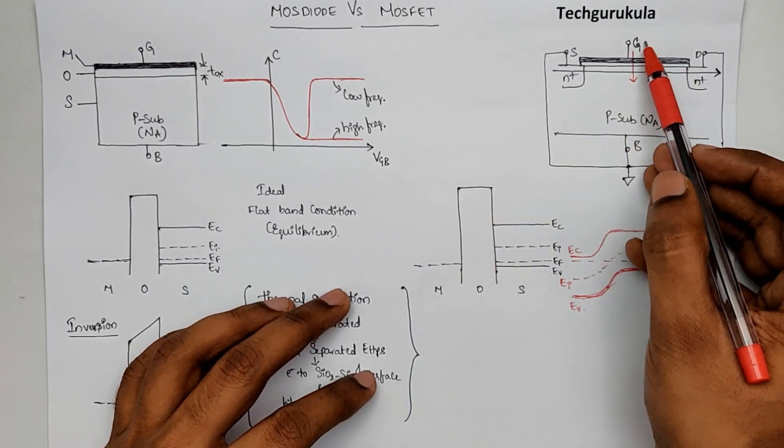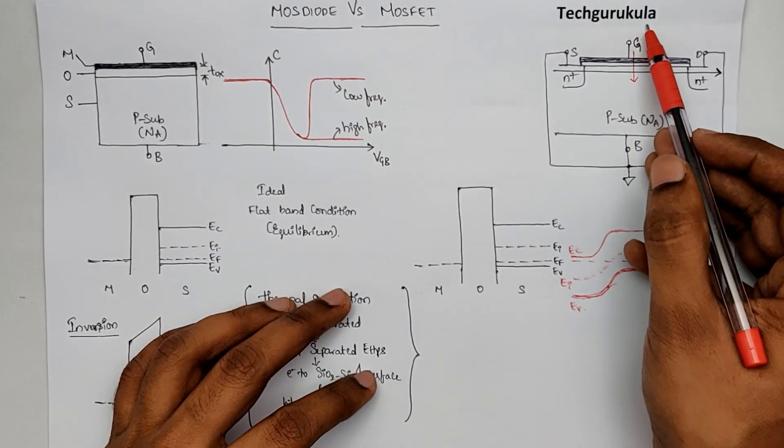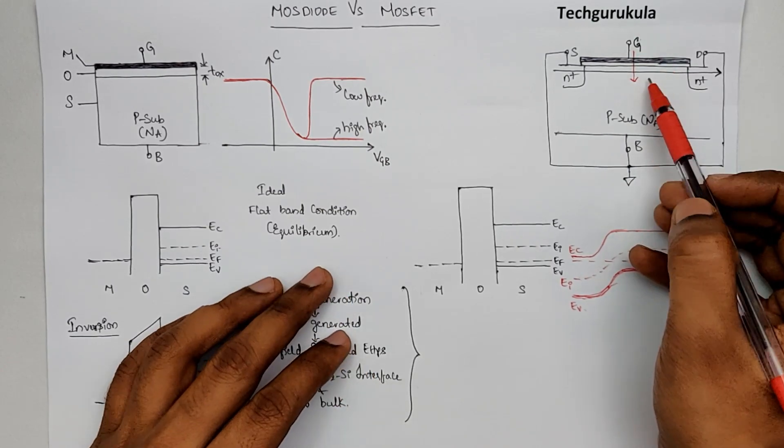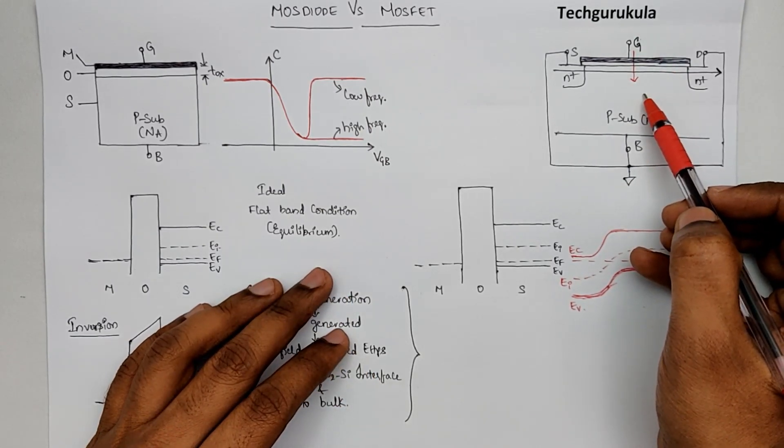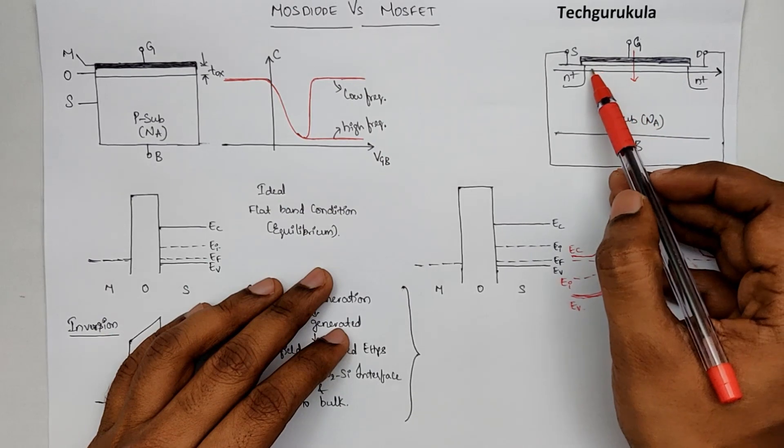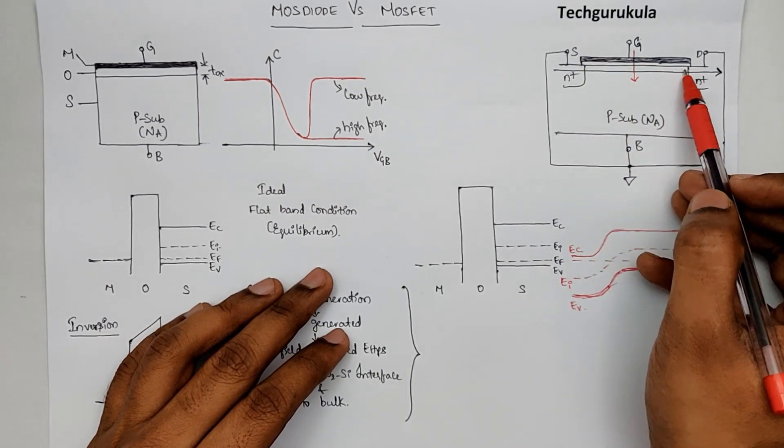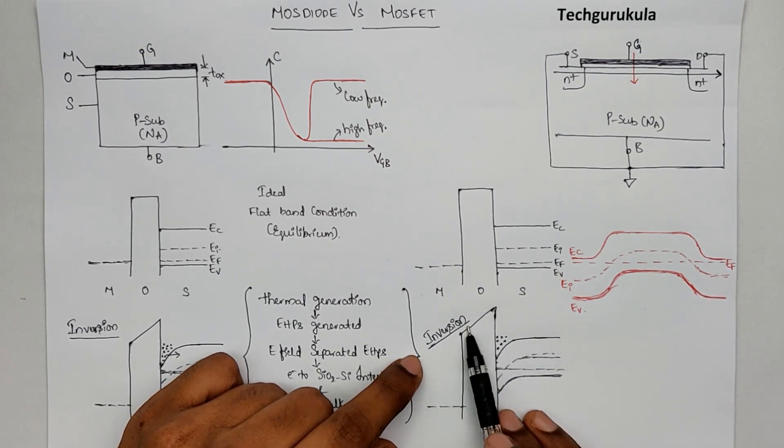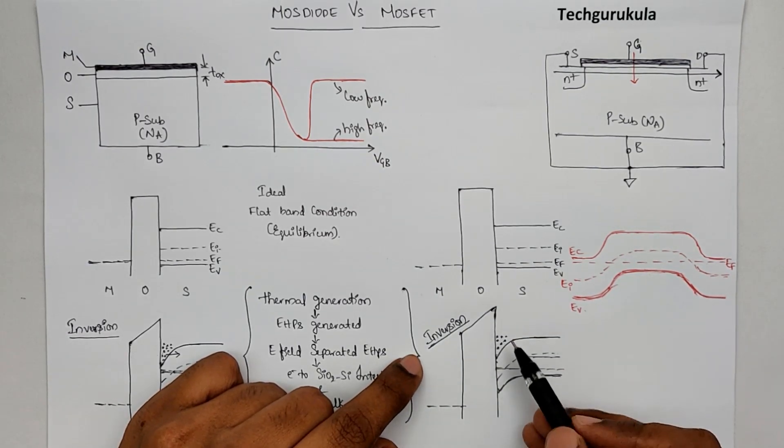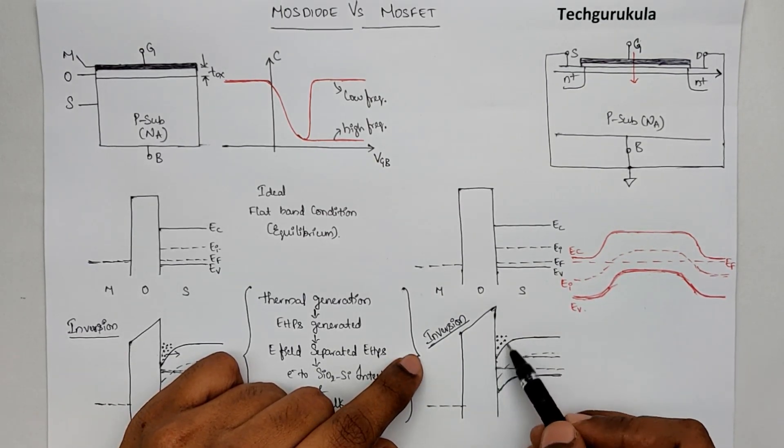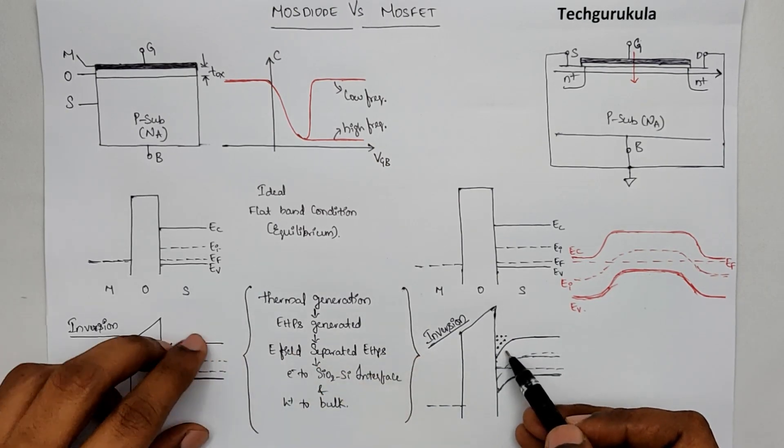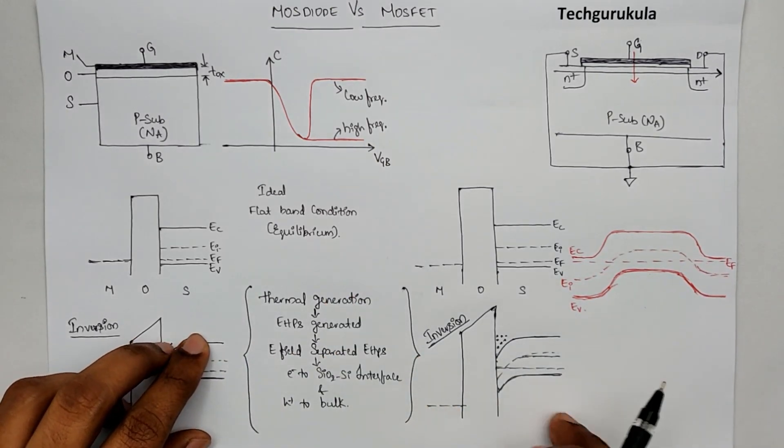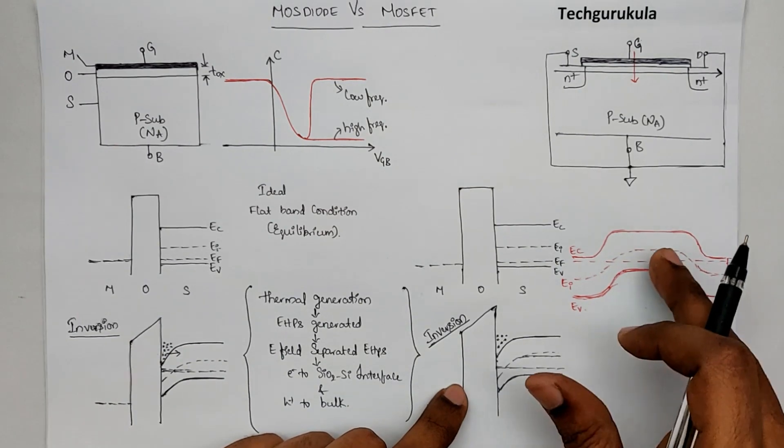Now, let's say as we are increasing the potential at gate, and we enter into inversion, let's see how the carriers are going to come into this channel region. So this is how the energy band diagram would look in inversion case. But the question is, how did we get these electrons near the surface? Is it with the same mechanism or a different one? So let's investigate from this figure.